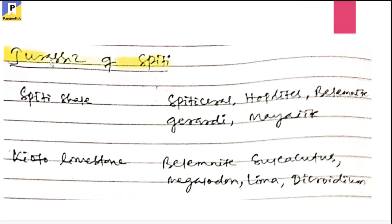The next important succession is the Jurassic of Spiti. Spiti Valley is situated in Himachal Pradesh, and the Jurassic-age rocks of Spiti Valley hold numerous fossil remains. There are mainly two litho units which hold plenty of fossils: the older one is the Kioto Limestone and the younger one is the Spiti Shale. The Kioto Limestone holds Belemnite, Calcacutus, Megalodon, Lima, and Dicroidium — a plant fossil. The Spiti Shale holds characteristic fossils such as Spiticerus, Hoplites, and Belemnite gerardi, which is the characteristic fossil for Spiti Shale, along with Mytiloides.